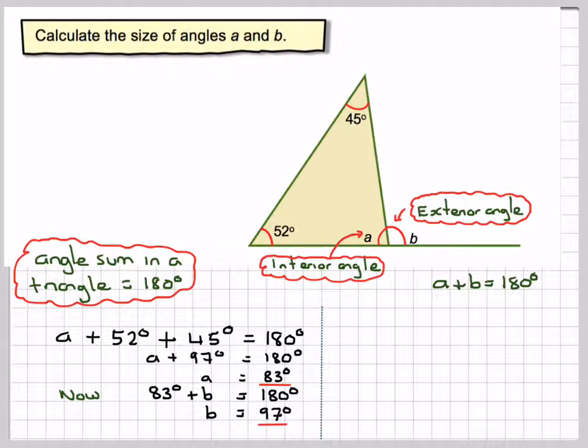Now, you might have noticed something. If you add 52 and 45, the two opposite interior angles, you get the value of the exterior angle, the opposite exterior angle. Note, B is equal to 52 plus 45, which is equal to 97 degrees.